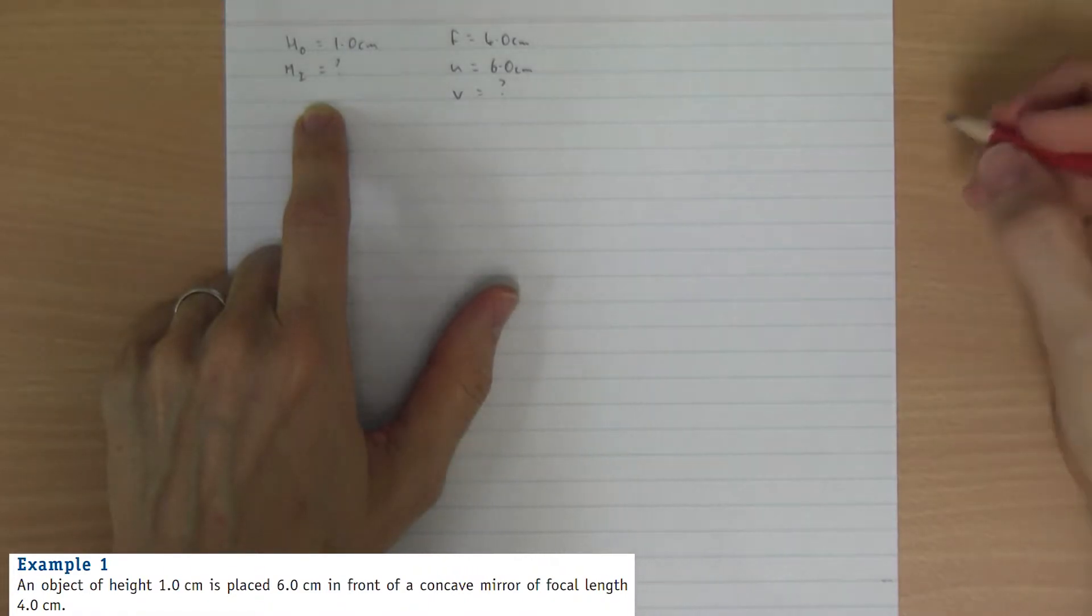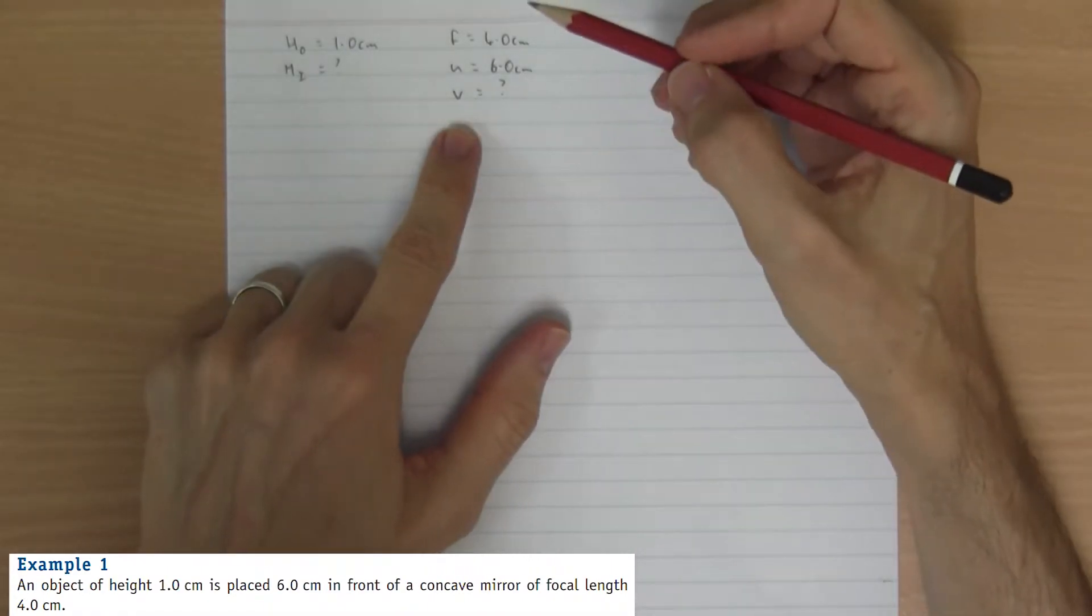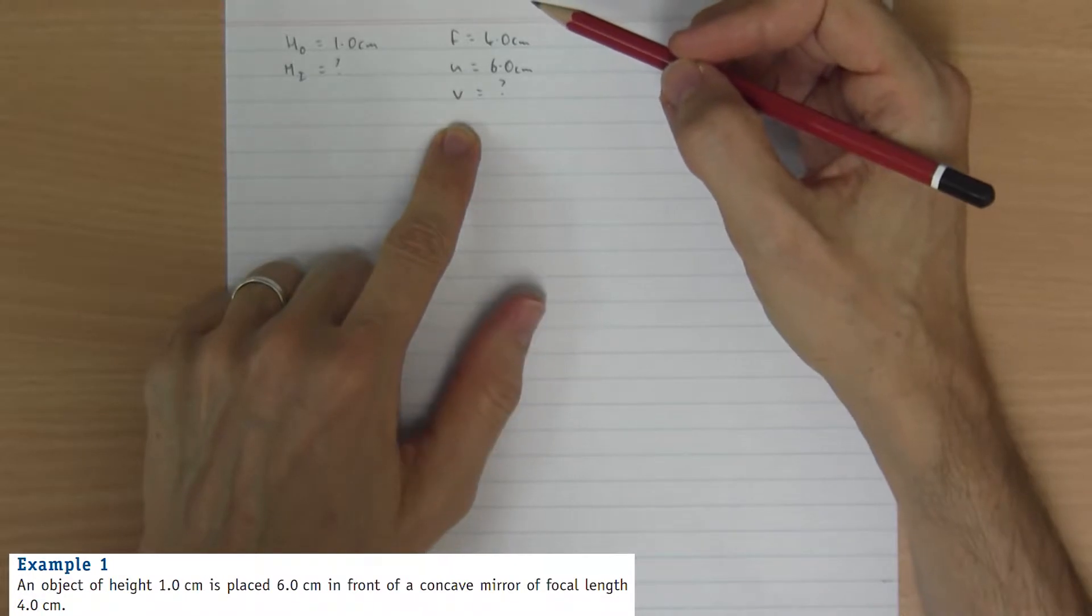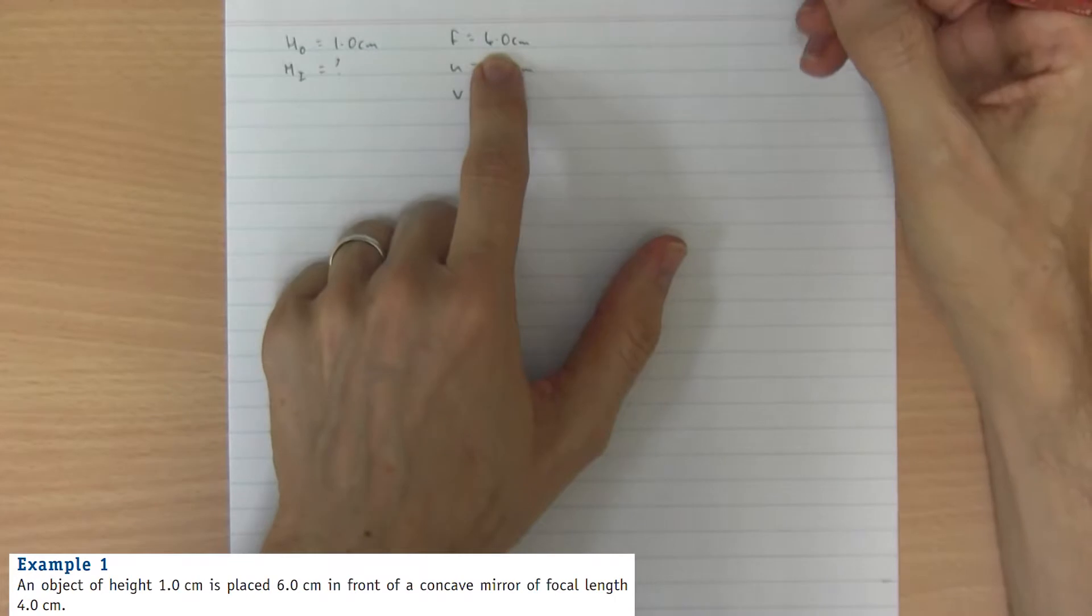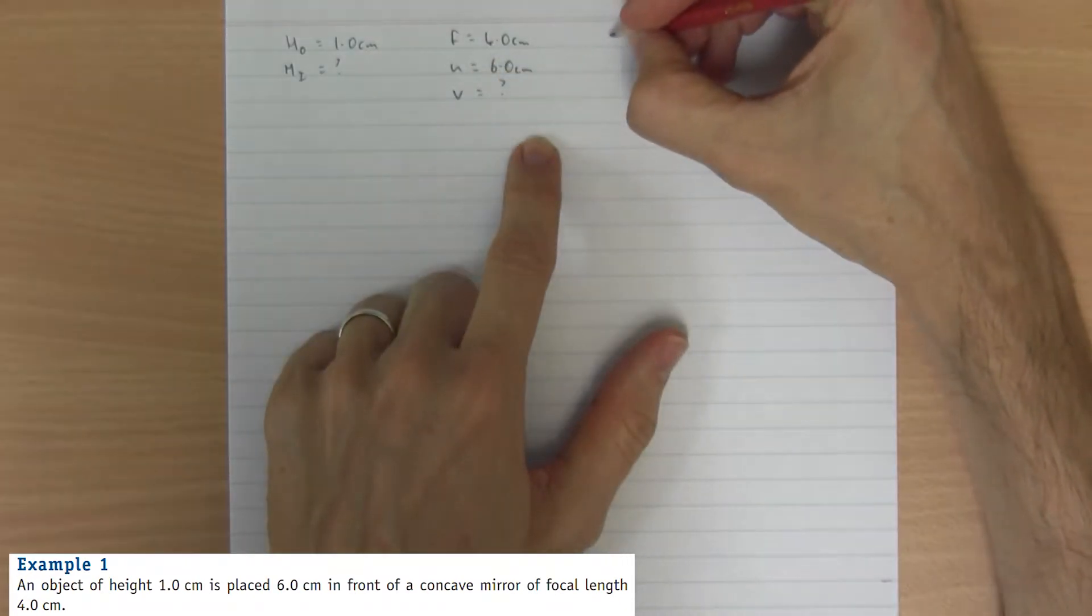We'll use the mirror formula. This is a concave mirror, which means it is converging, so the focal length is positive.